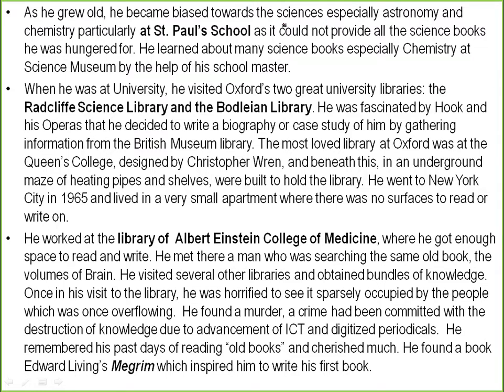As he grew older, he became biased towards the sciences, especially astronomy and chemistry, particularly at St. Paul's school. As that school could not provide all the science books he was hungry for, his school teacher helped him get chemistry books from the science museum. When he was at university, he visited Oxford's two great libraries: the Radcliffe Science Library and the Bodleian Library. He was fascinated by Hooke and his works, and decided to write a biography or case history of him, gathering information from the British Museum Library.